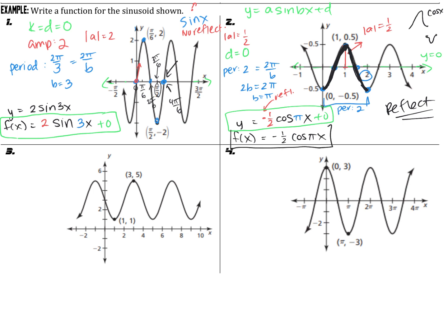Go ahead and look at numbers three and four and see if you can identify the center — which gives you your D value — and the amplitude. Then unpause the video and see how you did. On number three, the center is Y equals 3, so D equals 3. The amplitude is the distance from the center to the highest value: the center is at 3 and it goes up to 5, so the absolute value of A equals 2. On number four, the center is 0, and the amplitude (absolute value of A) is 3, going from 0 up to 3.